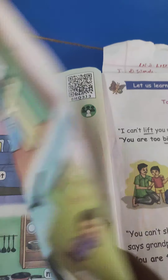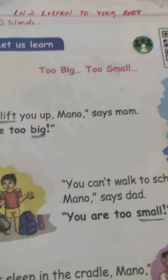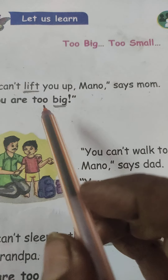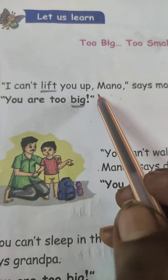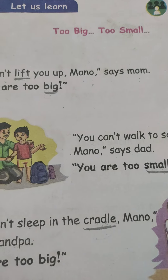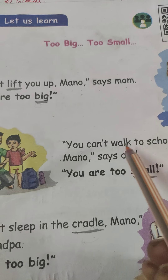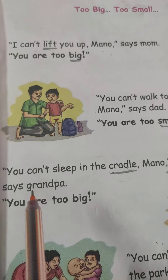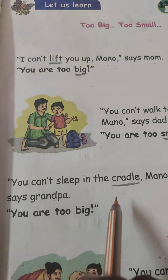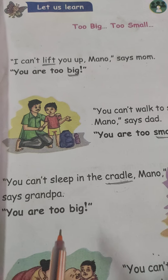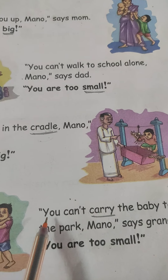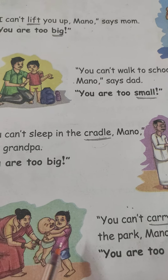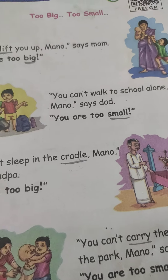That's all for this lesson. So I am repeating again — recap of the lesson. Mother is saying to Mano: I can't lift you up Mano, because you are too big. Father is saying: you can't walk to school alone, Mano says dad, you are too small. You can't sleep in the cradle, Mano says grandpa. Grandmother is saying: you can't carry the baby to the park, so you are too small.